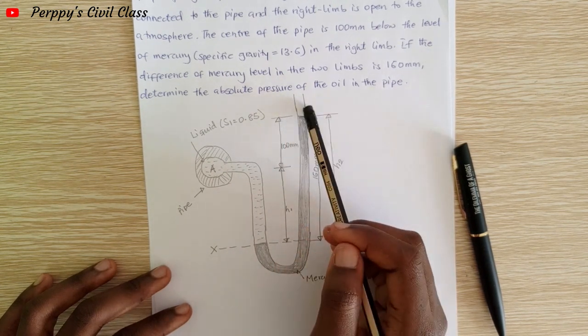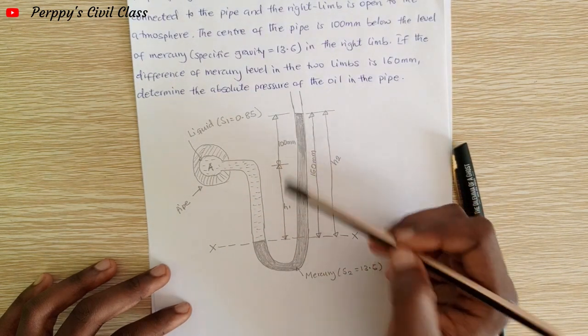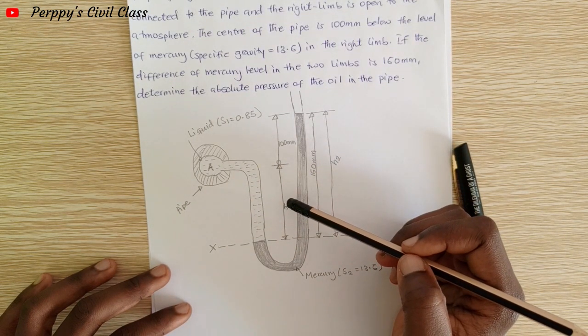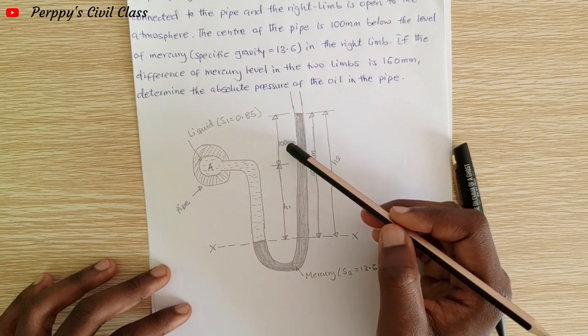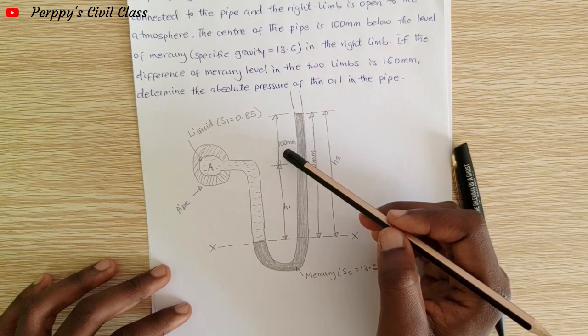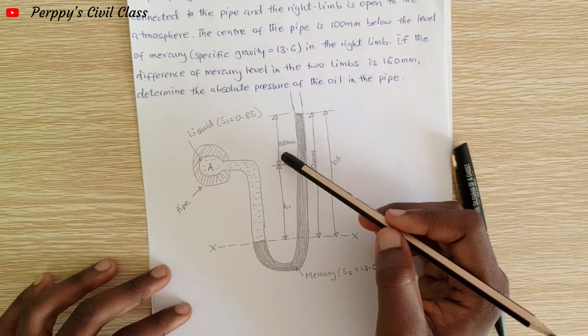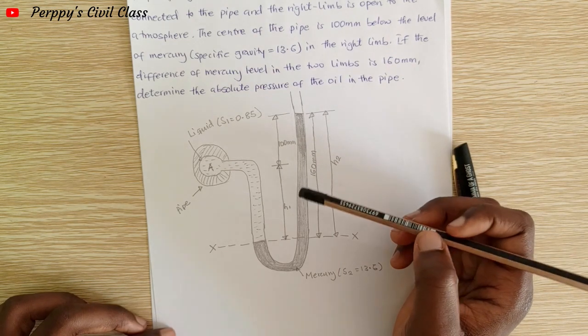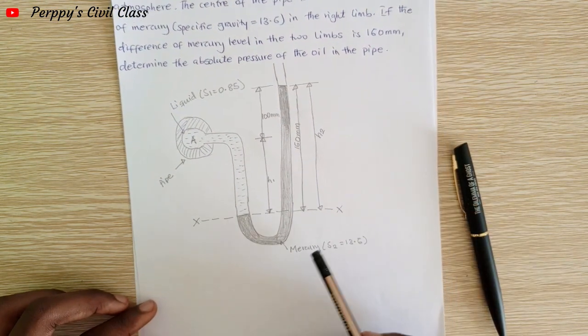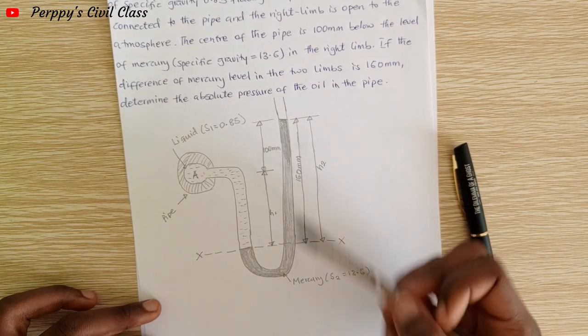The center of the pipe is 100 millimeters below the level of the mercury. The mercury has a specific gravity of 13.6, and the right limb is 160 millimeters.